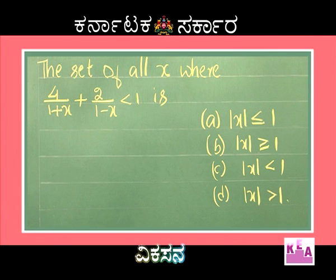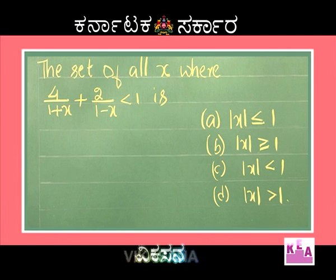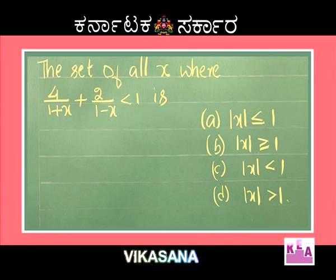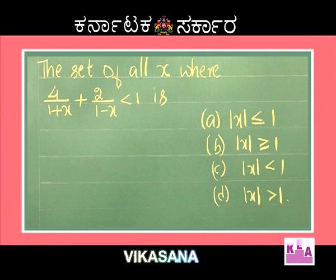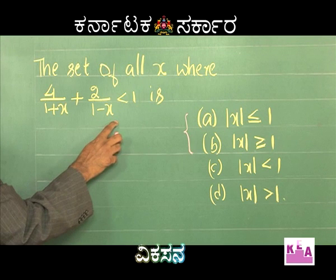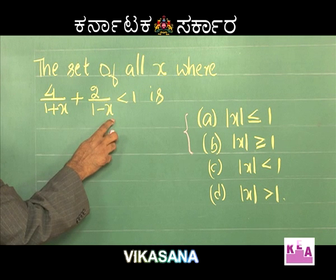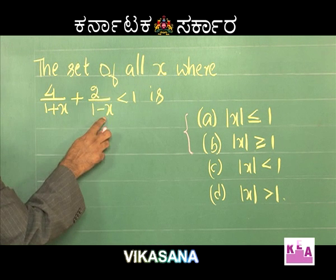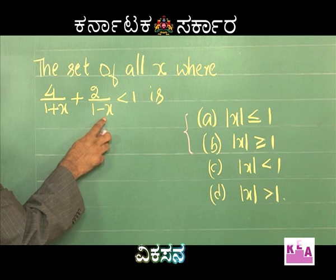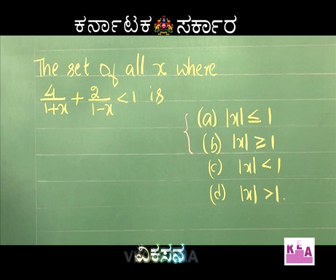Look at this question: the set of all x where 4/(1+x) + 2/(1-x) is less than 1. Option A: |x| ≤ 1, Option B: |x| ≥ 1, Option C: |x| < 1, Option D: |x| > 1. First basic thing: if x is equated to 1, the term 2/(1-x) becomes infinite, so x cannot be equal to 1. Infinity cannot be compared with a real number, so options A and B are ruled out.